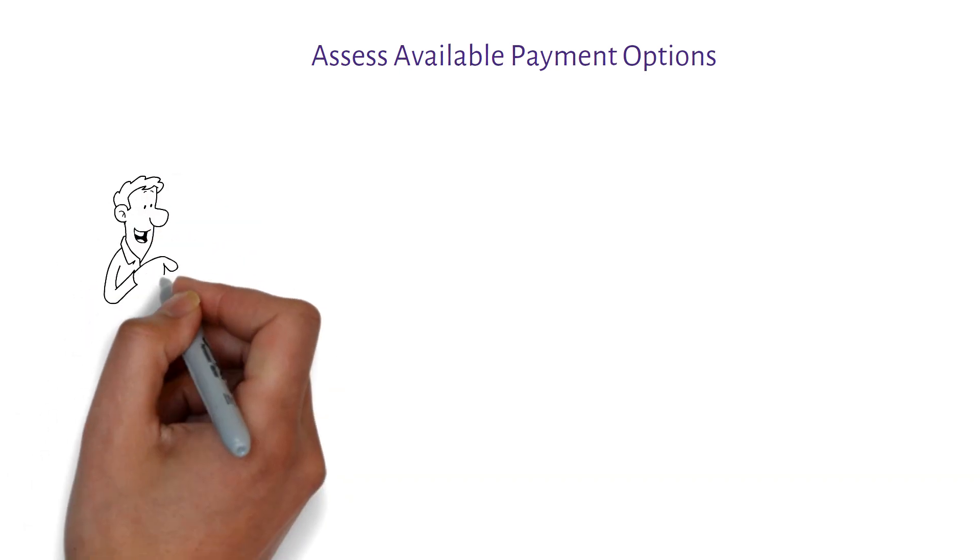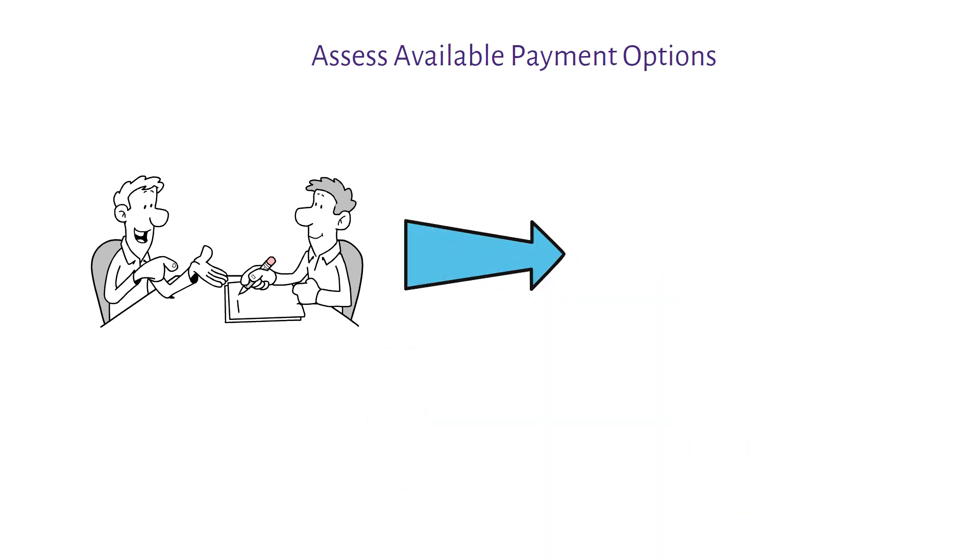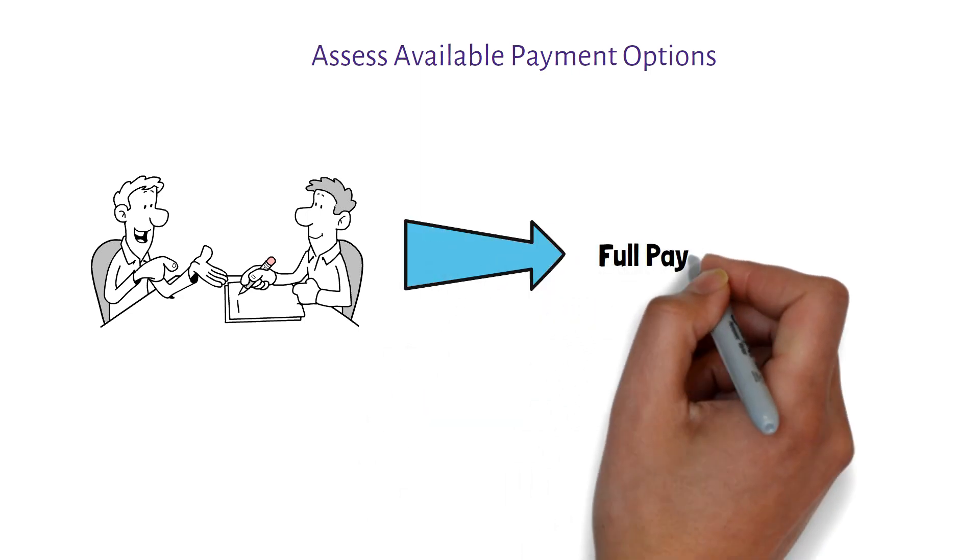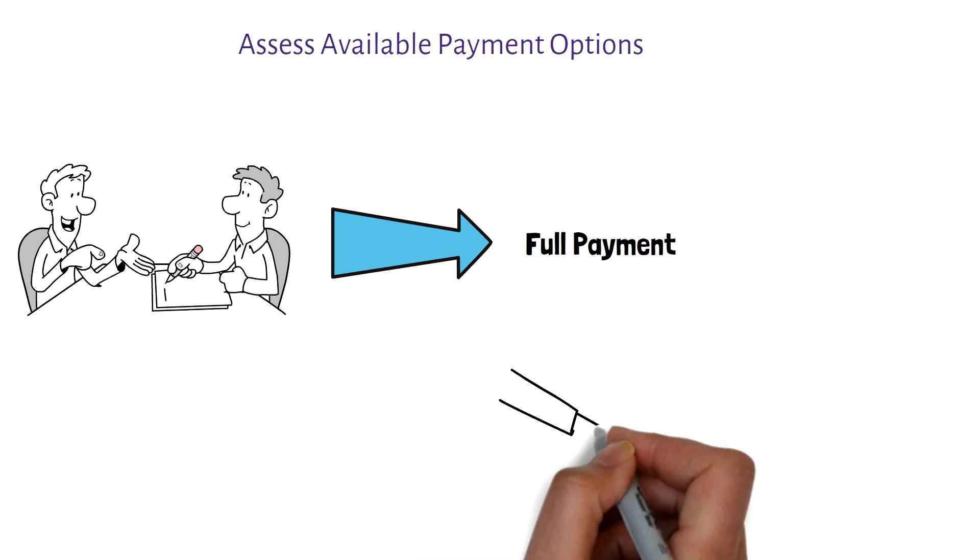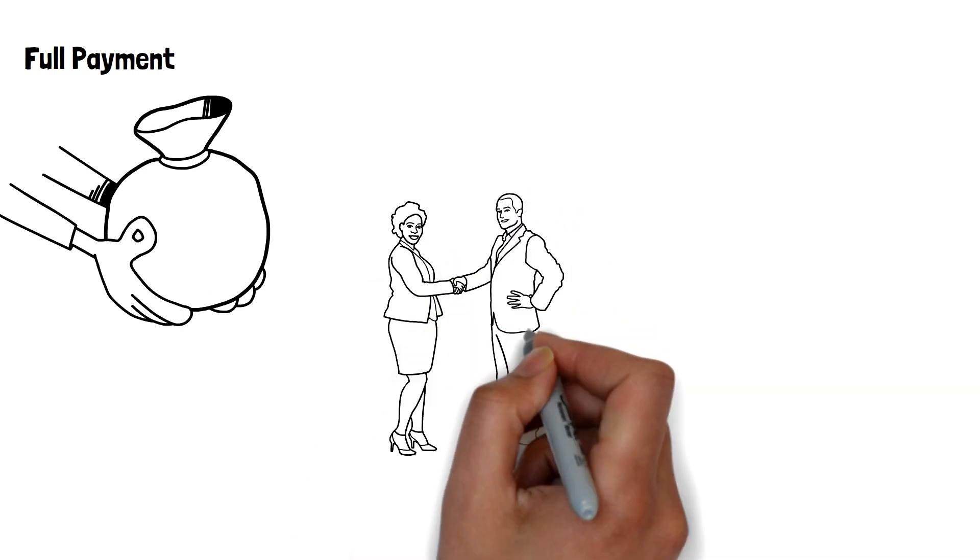Assess available payment options. The Internal Revenue Service, IRS, offers various payment options to help taxpayers settle their tax debt. These options include full payment. If you have the financial means, paying the entire tax debt in one lump sum is the simplest and most cost-effective approach. It eliminates the need for further negotiations or agreements with the IRS.